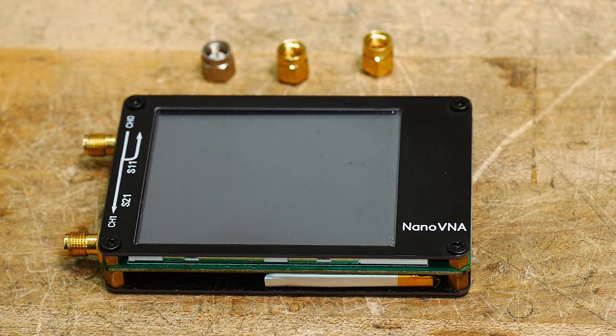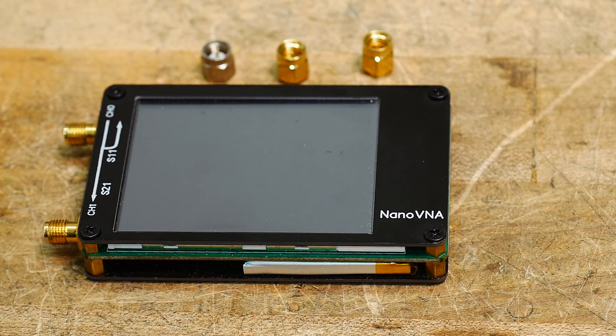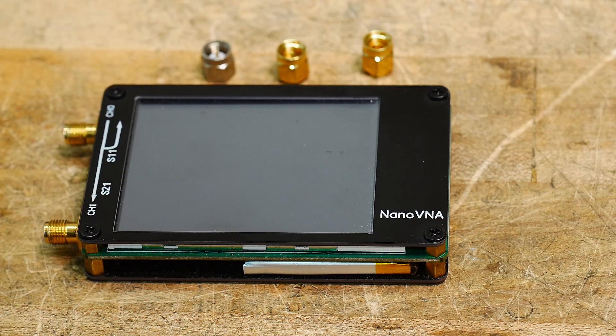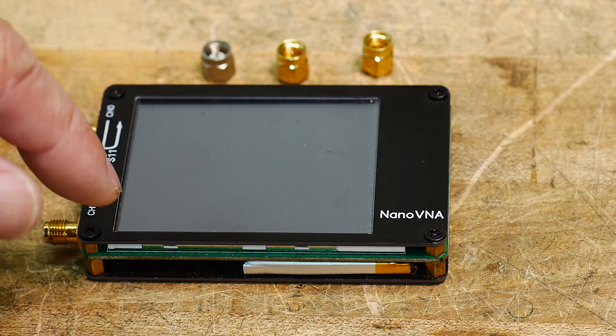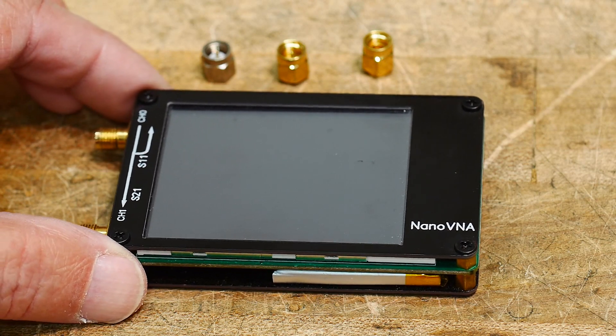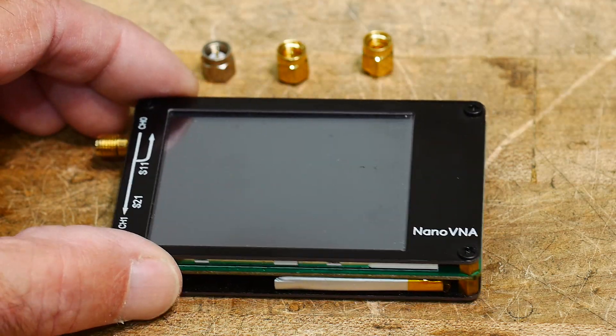So we're going to look at antennas. A lot of people buying these things are using them as an antenna analyzer. They want a graph of frequency versus SWR. They want to see how well their antennas matched. So we're going to try to do that in the simplest possible manner and get you started with the NanoVNA.